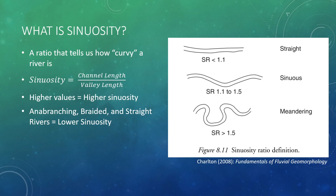Also note that we are often talking about a single channel system when we talk about sinuosity, though it is possible to consider the sinuosity of a multi-channel system as well. However, in these cases, we typically try to measure from the most dominant channel in the area — the one with the highest or greatest discharge. These stream types typically exhibit low sinuosity.